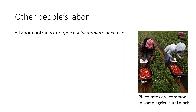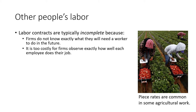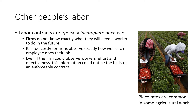Labor contracts are typically incomplete. The primary reason is that it's impossible for firms to know exactly what they'll need a worker to do — think about how many situations arose in your work experience that were not explicitly laid out in the job description. Another reason is that it's simply too costly for firms to observe exactly how well each employee does their job. There's also the issue of observability: it's very difficult to accurately assess an individual's effort on a specific task, and even if a firm could observe it, this information could not be the basis of an enforceable contract.